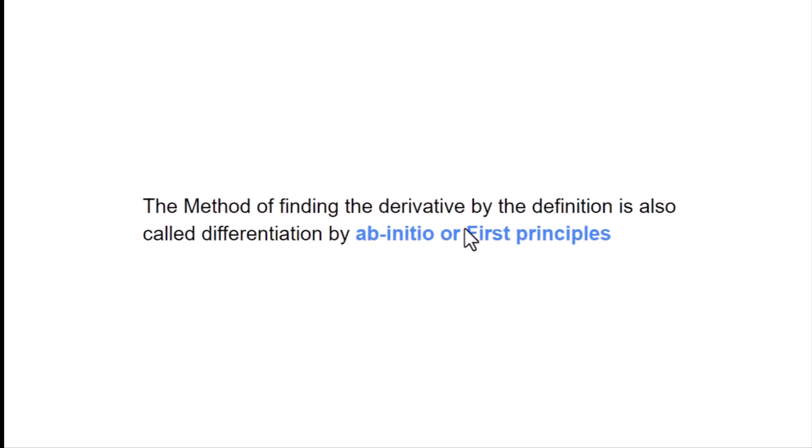Next, the method of finding the derivative by definition is also called differentiation by ab-initio or first principle. As we have studied the definition rule in the last lecture, the definition rule is called ab-initio method, and the third name is first principle.